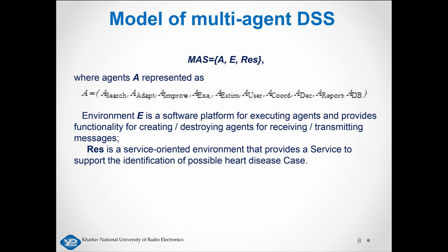The multi-agent DSS module is represented as a tuple where A is Agents and Environment E is a software platform for executing agents, providing functionality for creating and destroying agents and for receiving or transmitting messages. RAS is a service-oriented environment that provides the service to support the identification of possible heart disease cases.